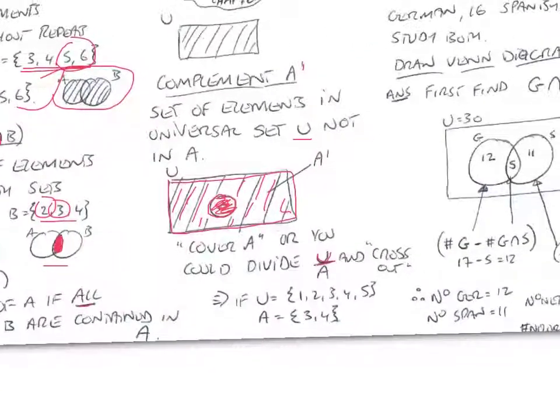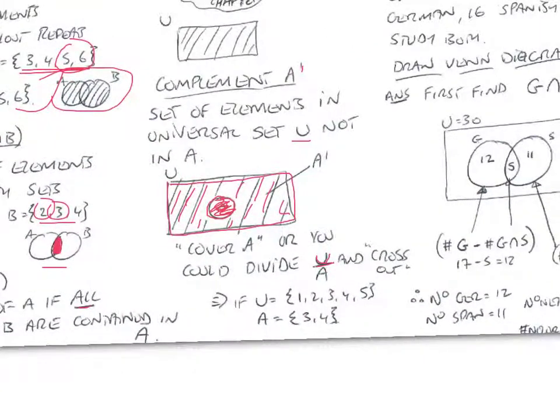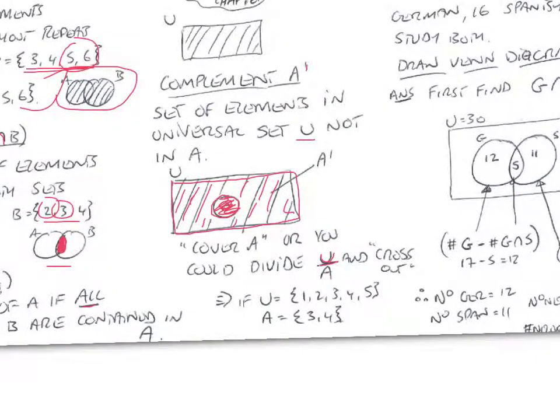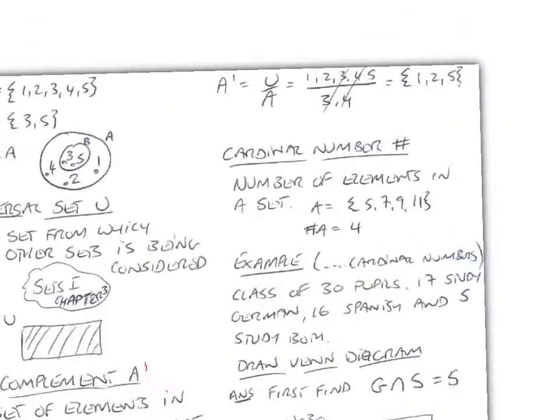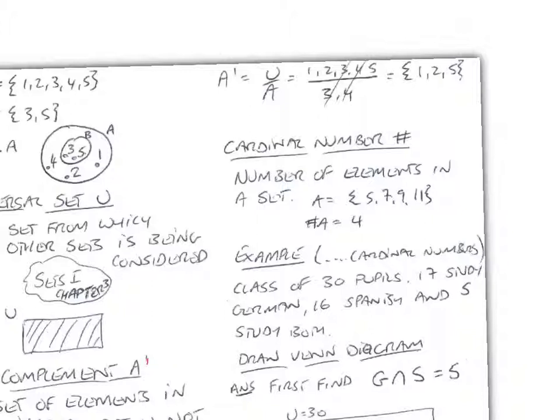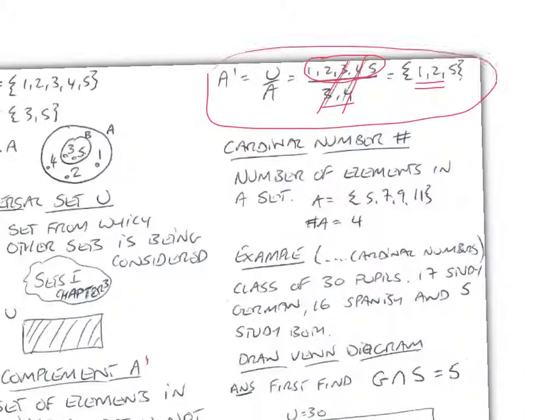Or you could actually divide the elements of U divided by A, just as a way of viewing and crossing out. So if U was equal to 1, 2, 3, 4, 5, and A was 3 and 4, if I was just to write A complement equals, you know, what's in U over A, so I have 1, 2, 3, 4, 5, and 3 and 4 there, and I cross out my 3 and 4, I just have 1, 2, 5 on the top, and that's actually the elements of A complement. It's just another way of crossing and dividing, I call it, just a little method you might use.